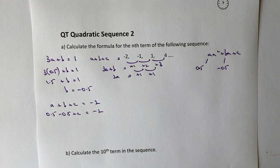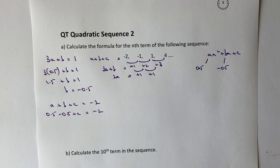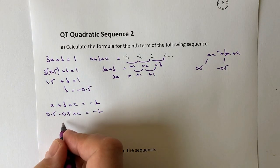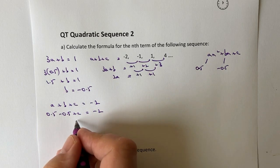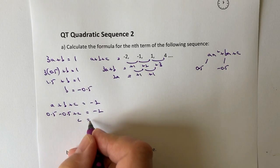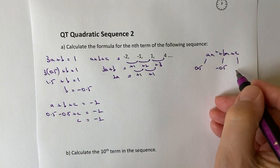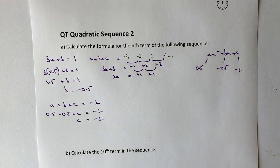So 0.5 minus 0.5 is going to be 1—beg your pardon, it's going to be 0. It's going to be 0. So 0 plus c, c then is going to equal -2. So the final part of that is c equals -2.